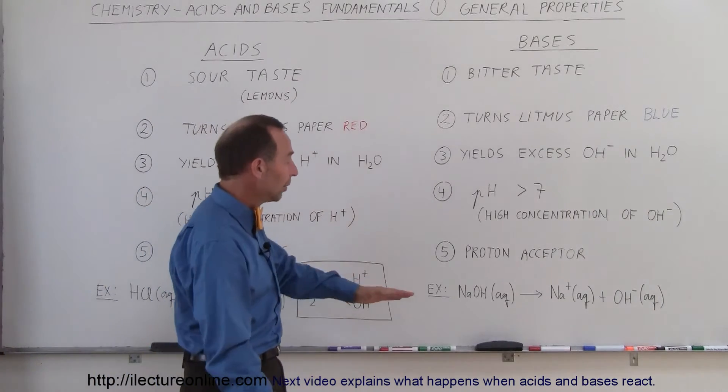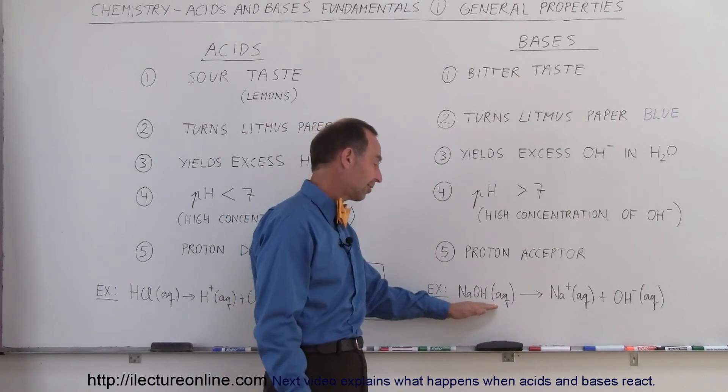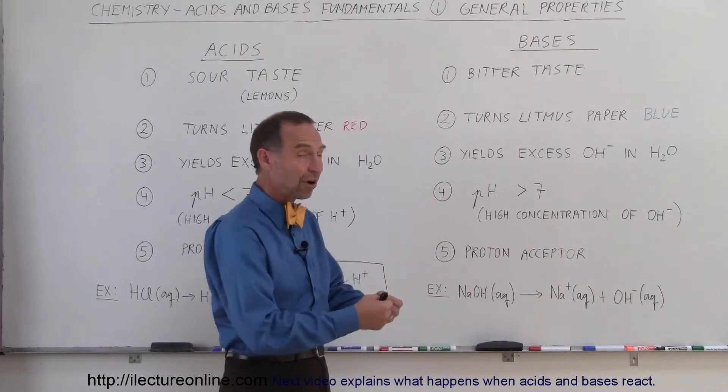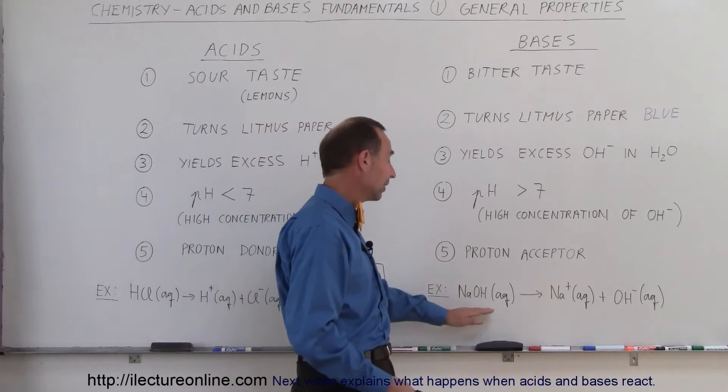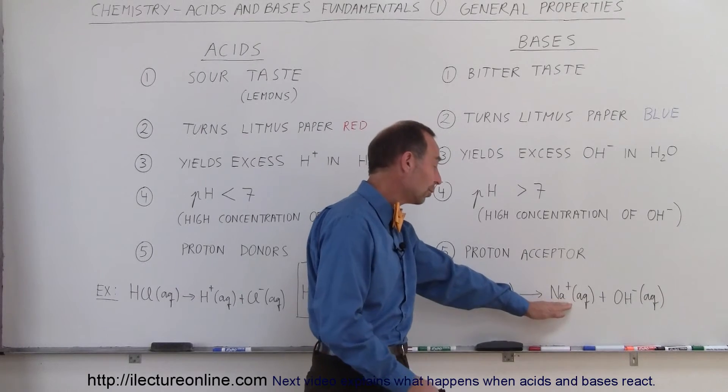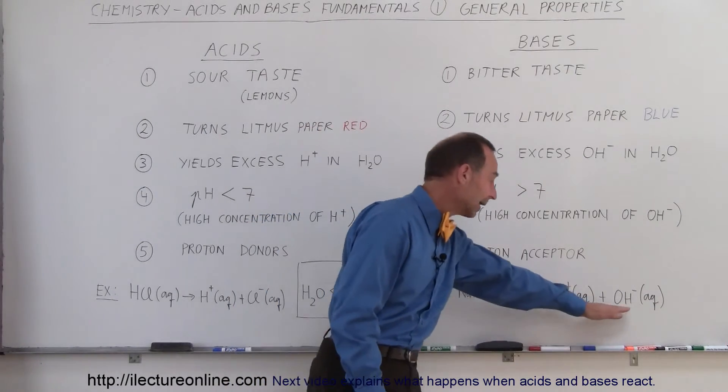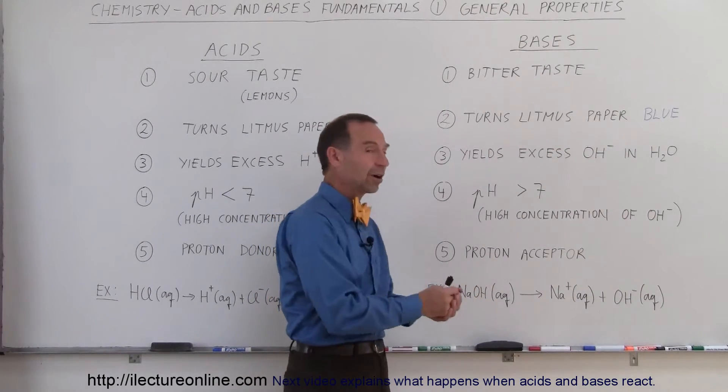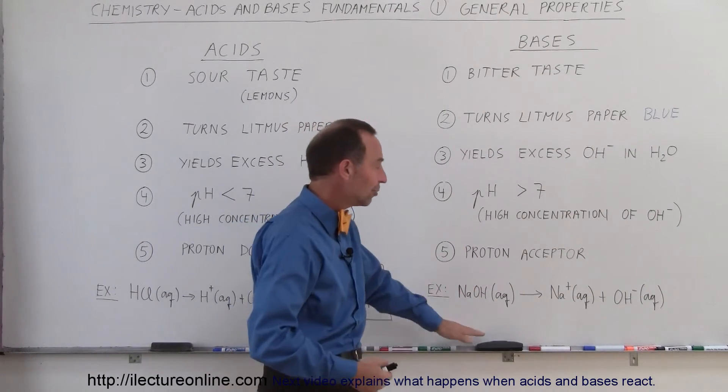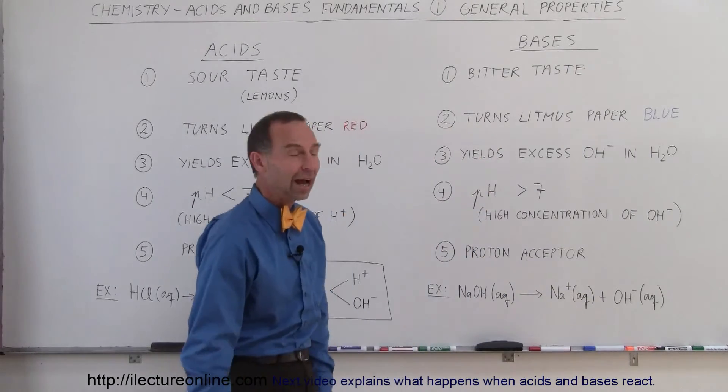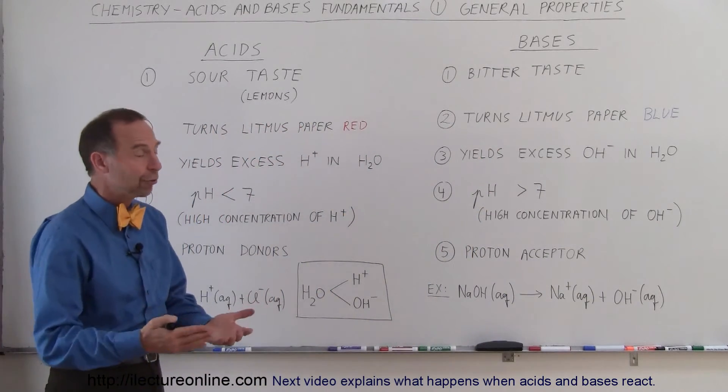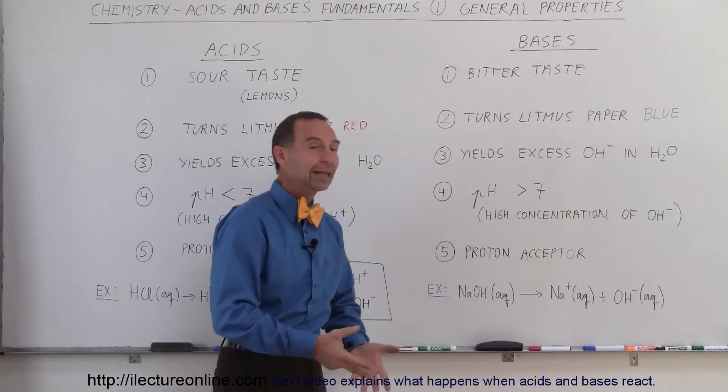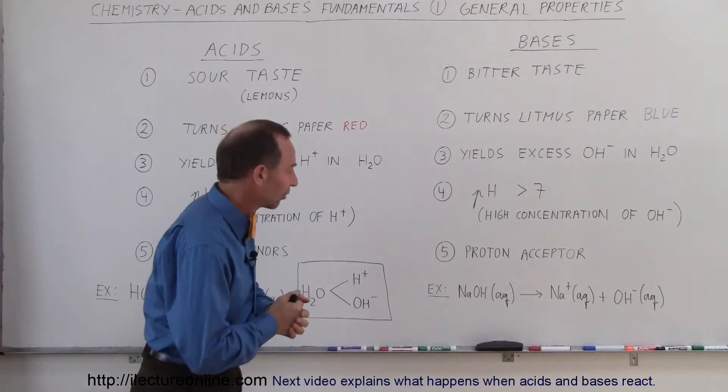On a base, for example, we have sodium hydroxide, NaOH. If you put sodium hydroxide into the solution, what you find is that they will separate. Sodium will then be on its own as a positive ion, and the hydroxide ion will be there in excess, because for every sodium hydroxide molecule, when they separate, you add an additional hydroxide ion into the solution. Therefore when you have an excess of hydroxide ions in the solution, pH goes up, it becomes a basic solution.